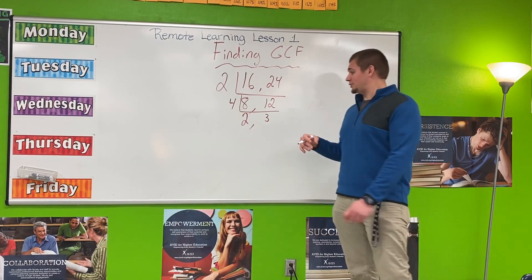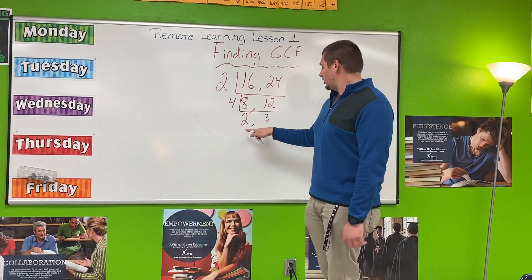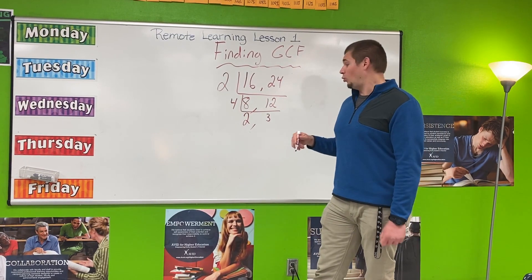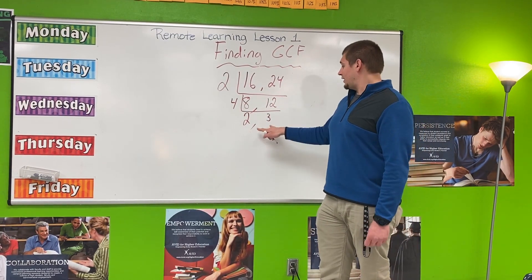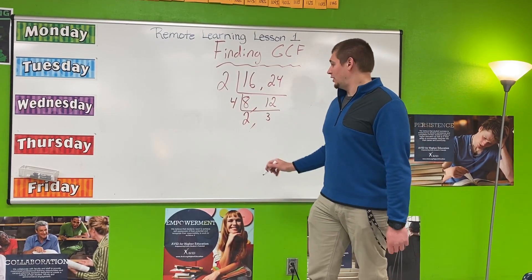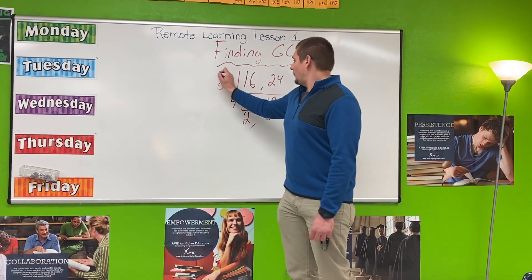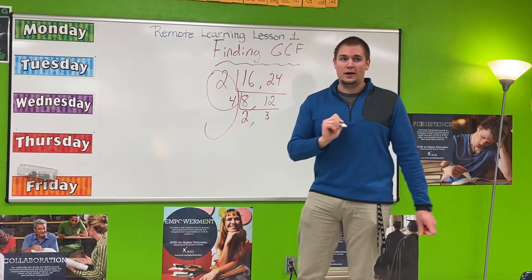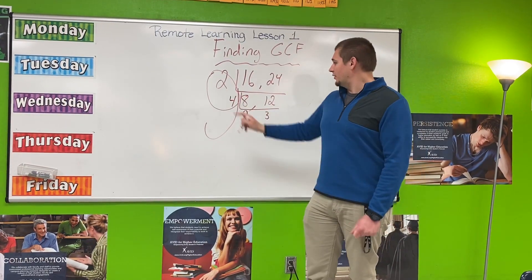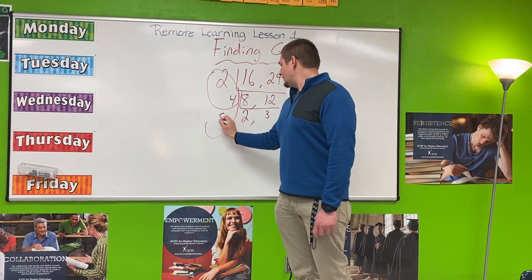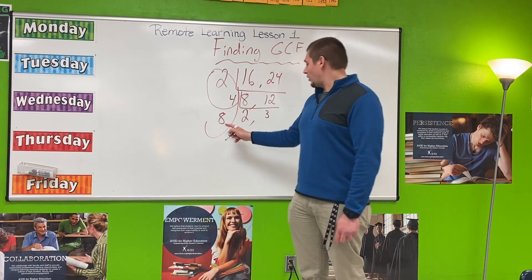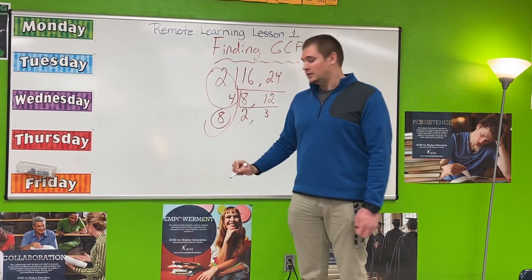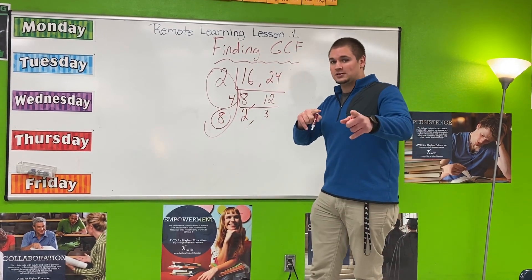To know that we are finished with this problem, you have to look at the numbers that you are left with. Do these share any factor other than a 1? In this case, both of these numbers are prime, so they don't. I am going to create my GCF on the left-hand side, and then multiply those two numbers together. 2 times 4 is 8, so my greatest common factor of 16 and 24 is 8. Stay tuned for lesson 2 tomorrow.